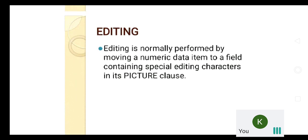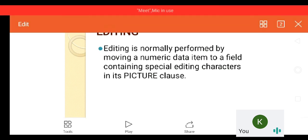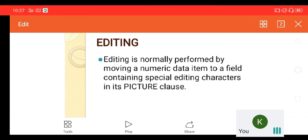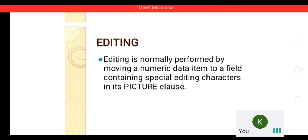The definition for editing: editing is normally performed by moving a numeric data item to a field containing special editing characters in its picture class. We are going to move a value to a picture class which consists of some editing characters. Based on the editing character, after moving the value it edits those values and produces the output. Before editing, what is the value we have, and after editing what is the value — that is the important focus of editing.